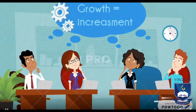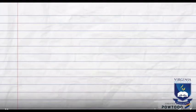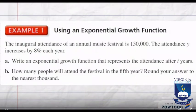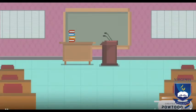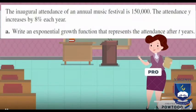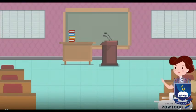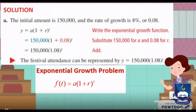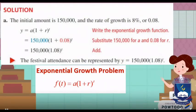Let's take another example. The inaugural attendance of an annual music festival is 150,000. The attendance y increases by 8% each year. Let's solve part a: write an exponential growth function that represents the attendance after t years. The initial amount is 150,000 and the rate of growth is 8%, or 0.08. We're going to substitute 150,000 for a and 0.08 for r, and then we're going to add.